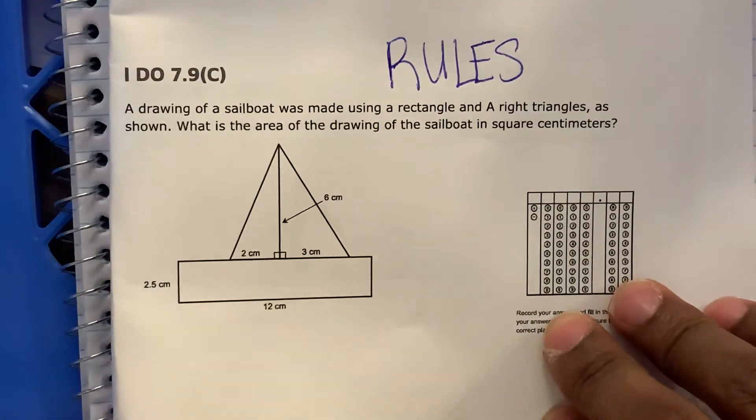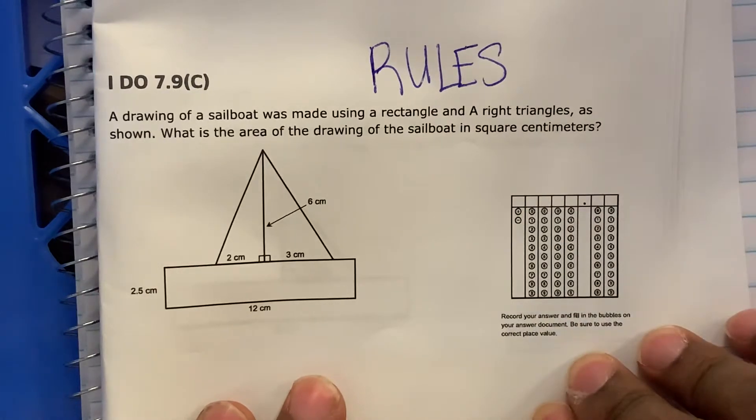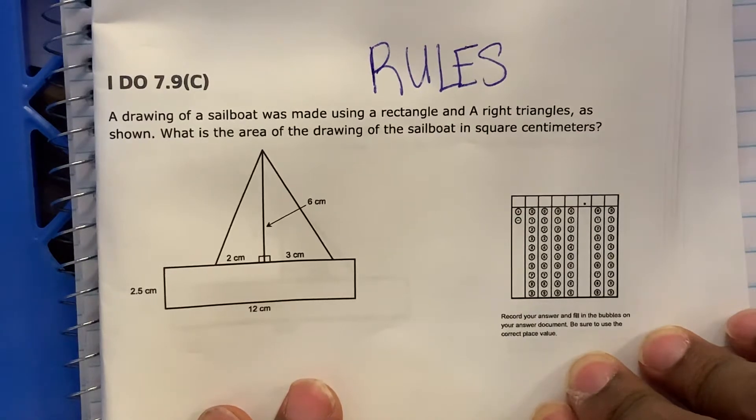All right, I DO 7.9C. A drawing of a sailboat was made using a rectangle and right triangles as shown. What is the area of the drawing of the sailboat in square centimeters?